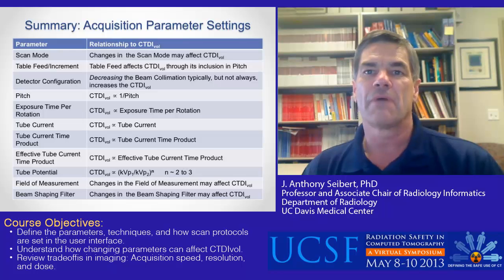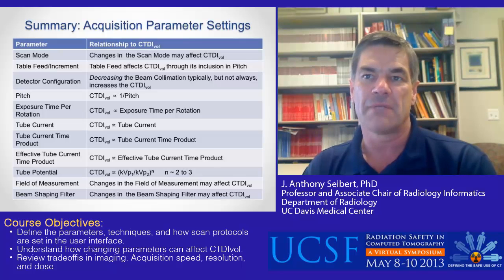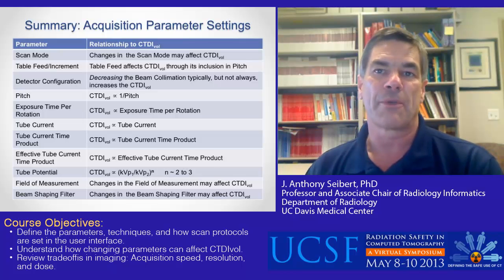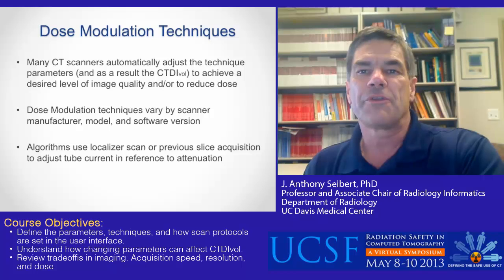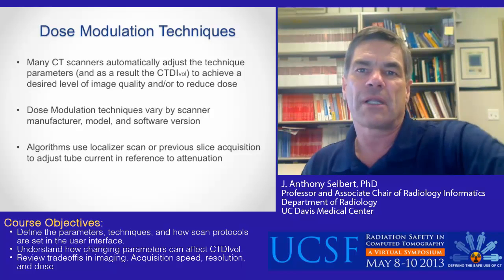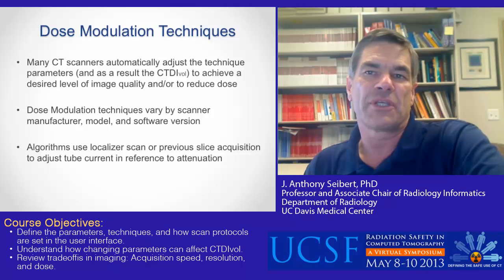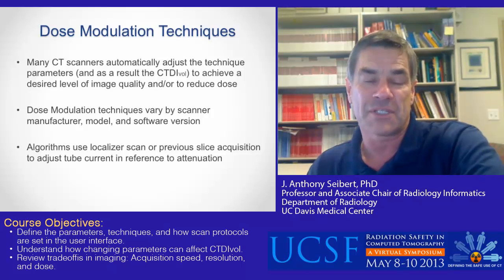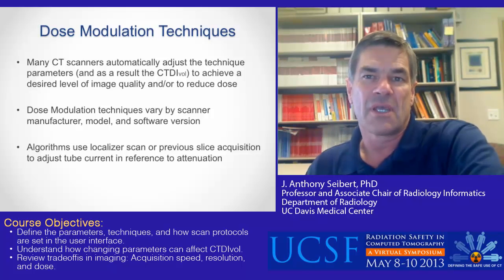A summary of acquisition parameter settings is displayed on this slide. The relationship of each parameter to CTDI vol is given, assuming all other parameters are fixed. Many CT scanners automatically vary the technique factors according to the attenuation variability of the patient habitus, determined either by analysis of the localizer exam or by the previous slice acquisition and analysis of the noise properties of that slice. Thus, use of dose modulation techniques can impact the CTDI vol.